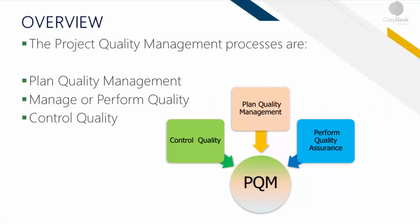Here's the overview. Quality management includes all of the processes for incorporating the company's quality policy regarding planning, managing, and controlling projects, and additionally, product quality requirements in order to meet the stakeholders' objectives, whether they're clients or internal. The processes are typically divided into three different areas. First is Plan Quality Management — the process of identifying quality requirements, where within your project you need to check for quality, and whether that piece matches your organization's quality policy.